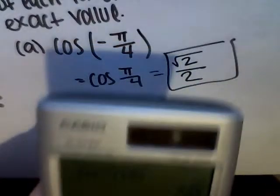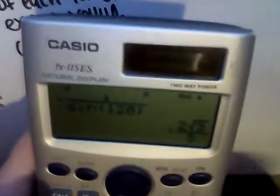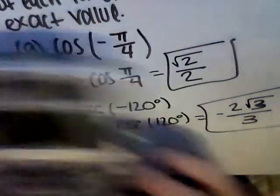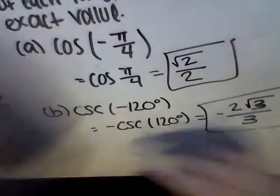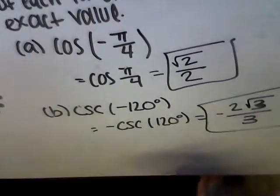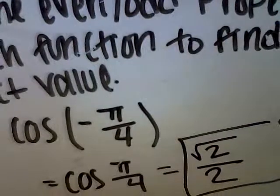And there's your answer. The answer is negative 2 square root 3 over 3. And that's it. Everything is just that simple. Plug it into your calculator and you find your answer. I hope this helps.